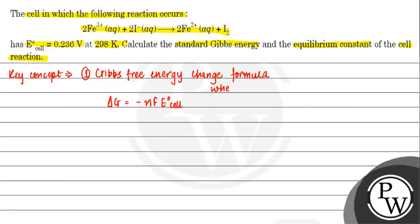Where ΔG is Gibbs free energy change, n is number of electrons involved in the reaction, and F is Faraday's constant.